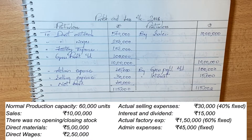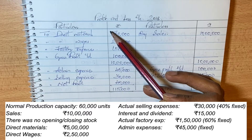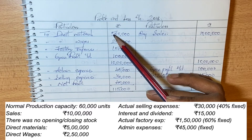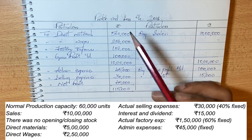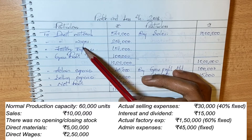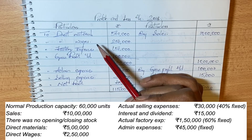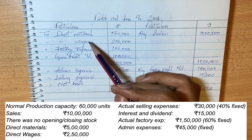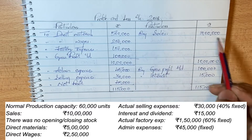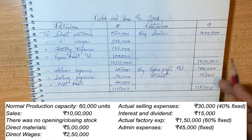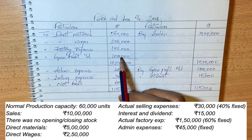First, profit as per financial accounts. Direct materials and wages: 5,50,000 and 2,50,000. Opening and closing stock is nil. Factory expenses are added. These three form the prime cost. Manufacturing costs are added similarly. Sales are 10,00,000. After deducting expenses, we get a gross profit of 1,00,000.